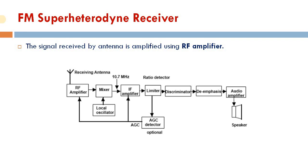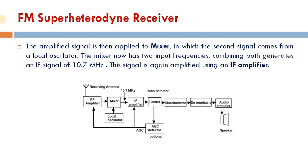Let us see in detail about the FM super heterodyne receiver by looking at its block diagram. The receiving antenna receives the signals transmitted by the transmitter and provides them as input to the radio frequency amplifier for amplifying the input signals.